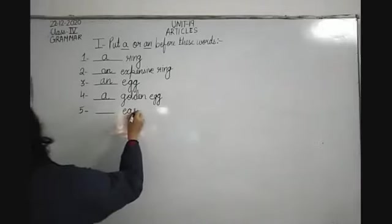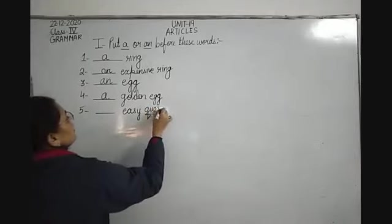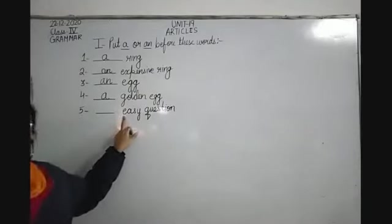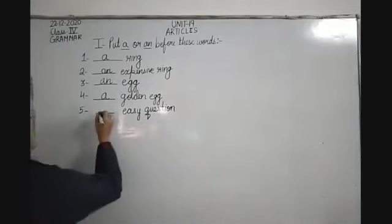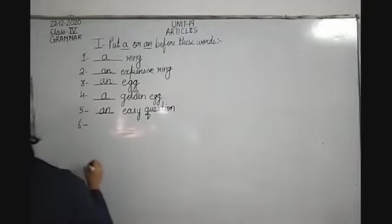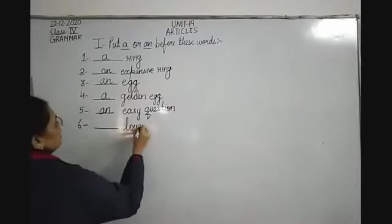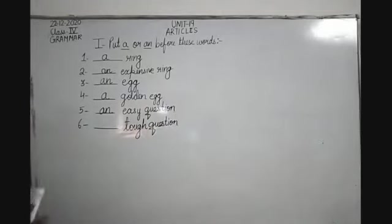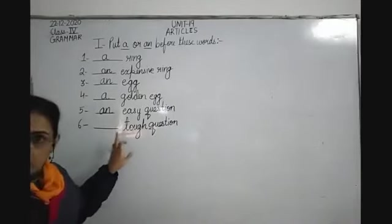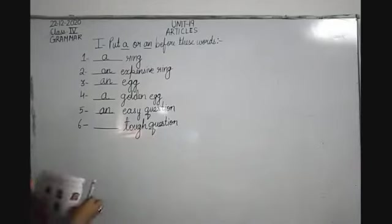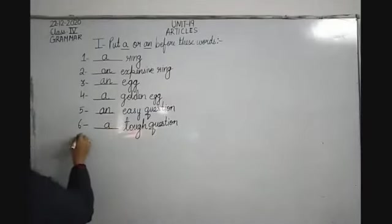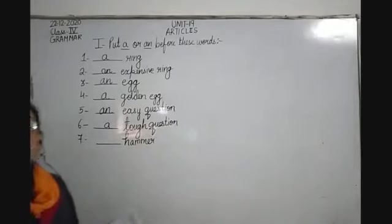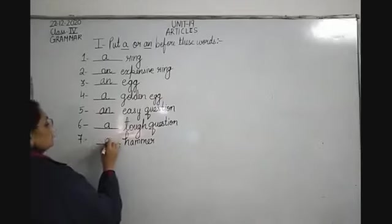Fifth: dash easy question. Easy starts with E and has a vowel sound, so we write AN easy question. Sixth: dash tough question. Tough starts with T, a consonant with a consonant sound, so A tough question. Seventh: dash hammer. Hammer starts with H which is a consonant and has a consonant sound, so A hammer.